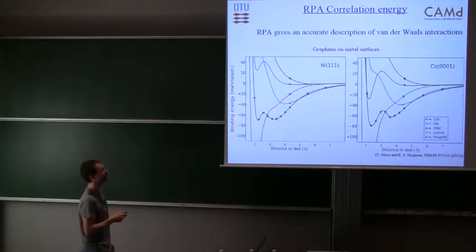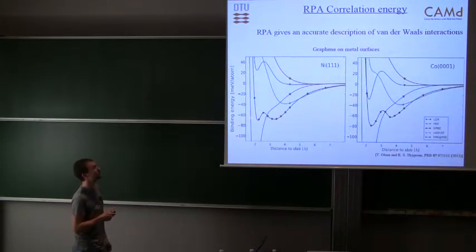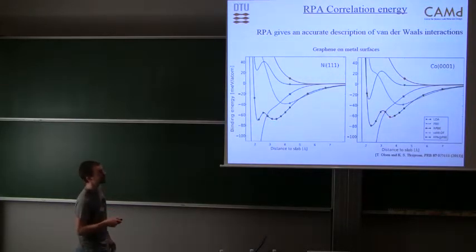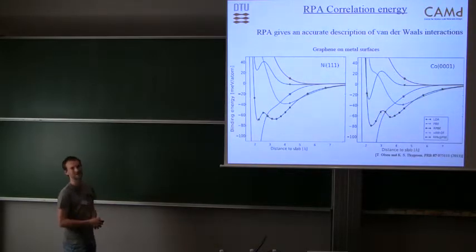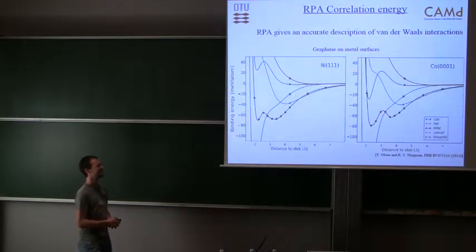It seems to capture the van der Waals interactions, but if we compare to experiments, graphene actually absorbs very close to the surface, in a region of about 2 angstrom. If we do the random phase approximation for this system, we actually get two minima: one which is a chemisorption minimum and one which is a physisorption minimum, and the same for cobalt. We don't really know how accurate the random phase approximation is for this system because there's no exact or higher accuracy calculations, but we sort of believe that the random phase approximation is the best possible choice for this system.